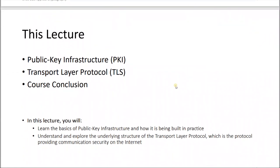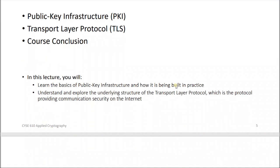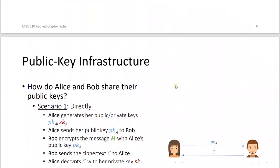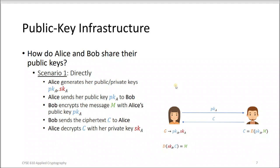The answer to the elliptic curve group law question is zero, because any line intersecting three points on the curve results in zero — that is the definition. Now let's start with our lecture and read the slides. First of all: public key infrastructure. We studied that we need a public key for public key cryptography, but how can we send the public key?